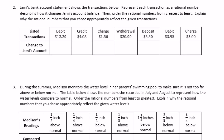Number two: Jamie's bank account statement shows transactions below. Represent each transaction as a rational number describing how it changes Jamie's account balance. A debit of $12.20 means you're taking out money, so it's negative $12.20. A credit of $4.08 — you've gained that money, so it's positive. A charge of $1.50 — you're losing it, so negative. A withdrawal decreases the account, so negative. A deposit means your account is growing, so positive. Another debit is negative, and a charge is negative.